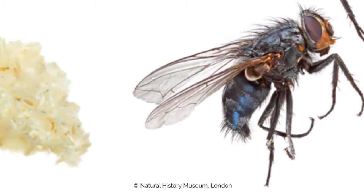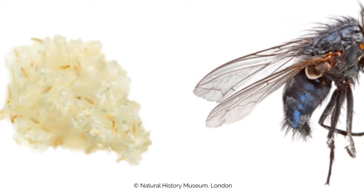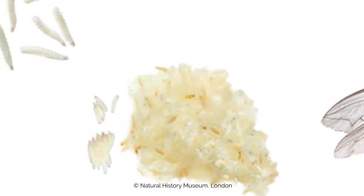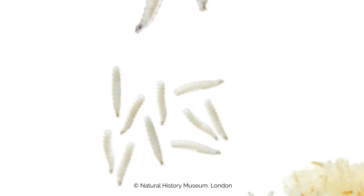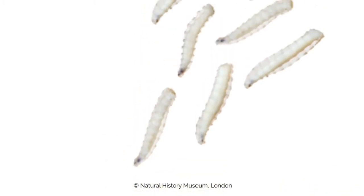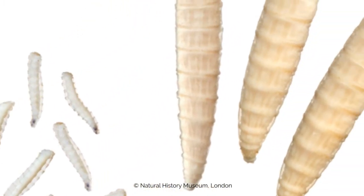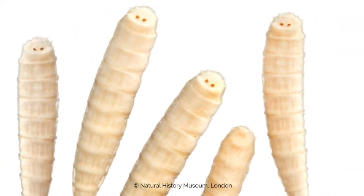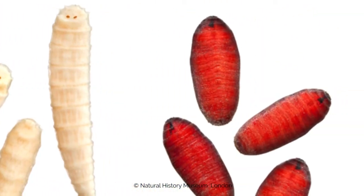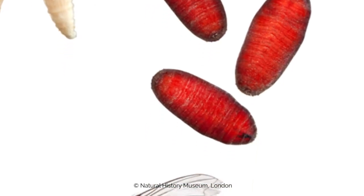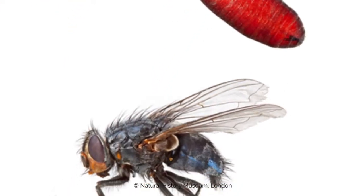Flies are holometabolists, so they go through different life stages. These start with the female fly laying her eggs on the animal. These then hatch out into first instar larvae. They go through two molts into second and third instar larvae, and then they move off the body to pupate. Within the pupal case, the adult fly forms from the maggot.